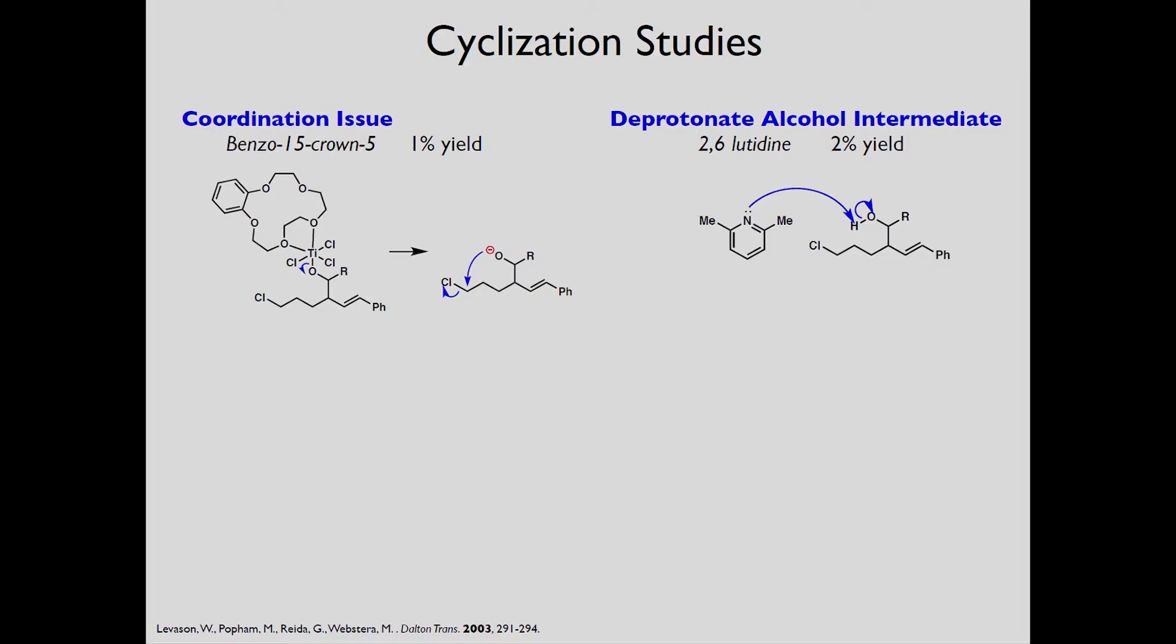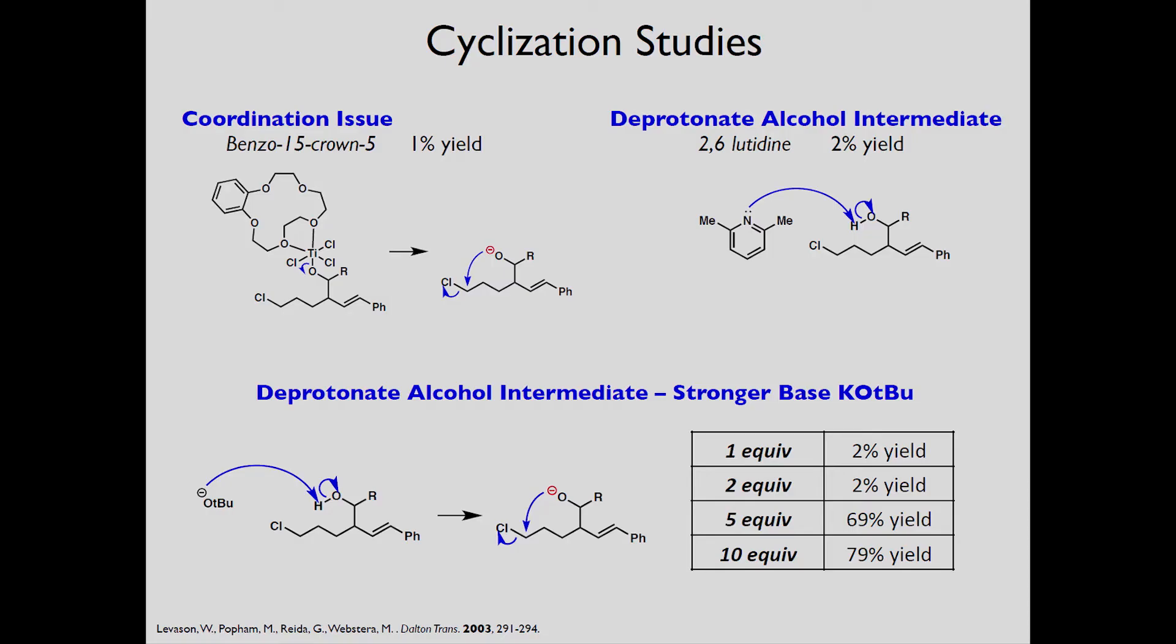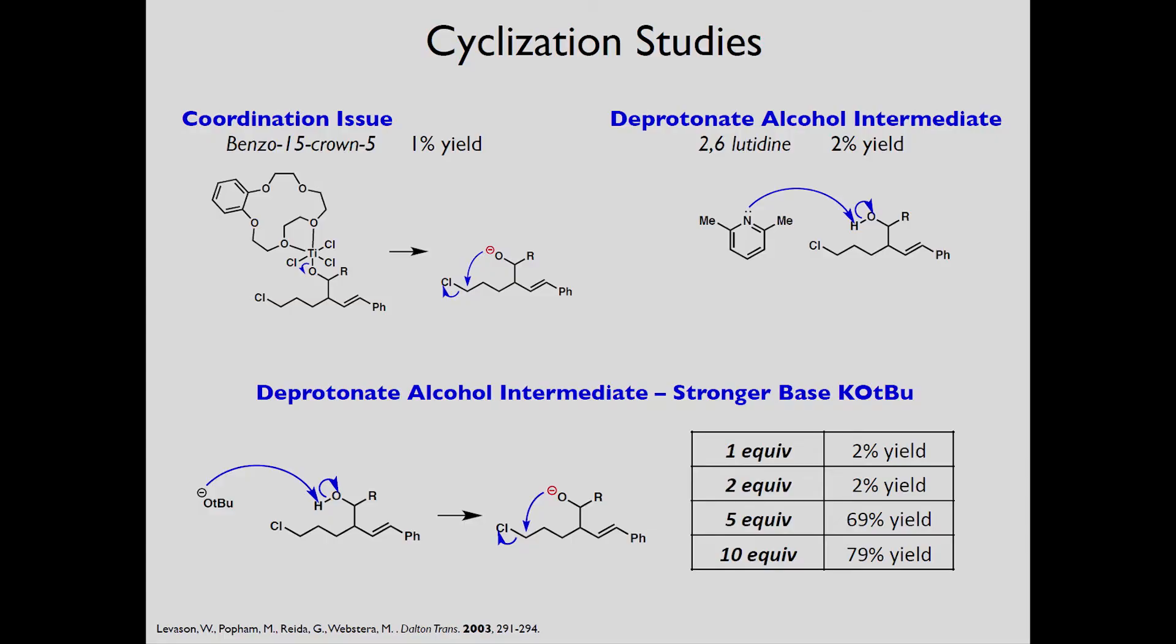Here we started off with a mild base 2,6 lutidine and again believed that we could pluck off this proton and allow for the cyclic product to form. Again only saw 2% yield. We moved forward with an even stronger base potassium t-butoxide and thought that this t-butoxide group could again pluck off the proton and allow for cyclization to occur. With 1 and 2 equivalents of the strong base we only saw 2% yield of the tetrahydropyran. However when we increased the equivalents to 5 and even 10 our yield increased dramatically to 69% and 79% yield. And while you could think of this as a deprotonation problem we believe that with our proposed mechanism it is actually a coordination issue.